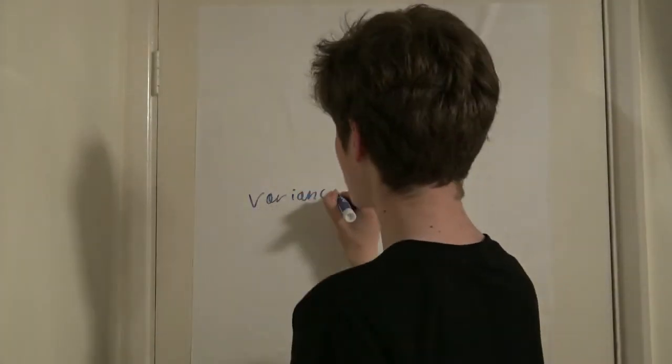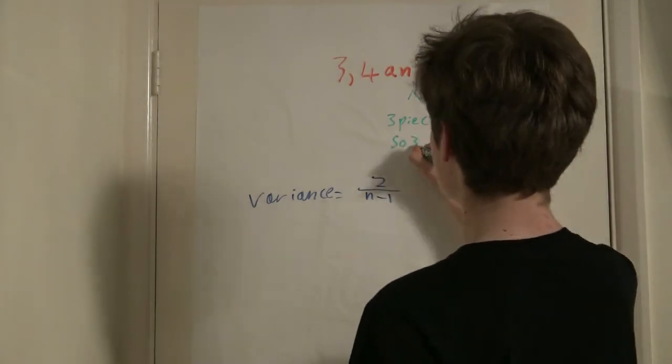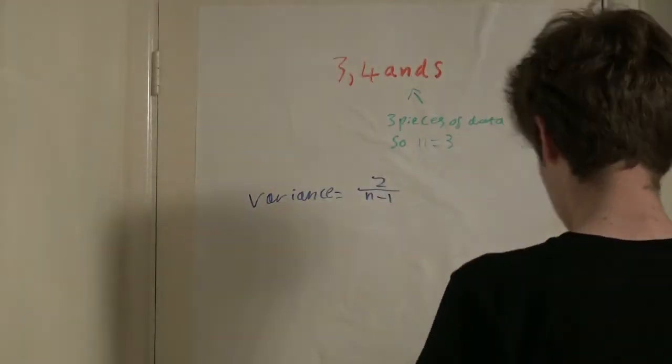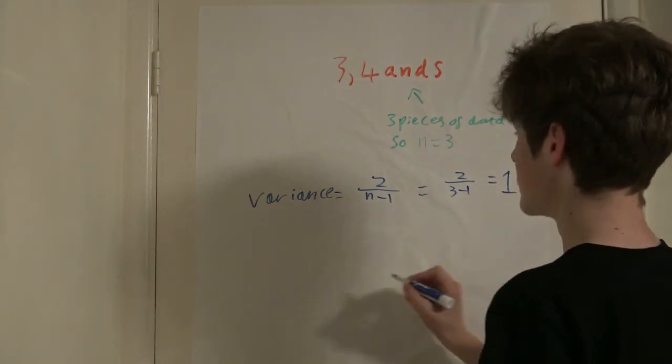We then divide this number by n minus 1, which is the number of pieces of data minus 1. We have 3 pieces of data, so we minus 3 by 1 which is 2, and 2 divided by 2 is 1.